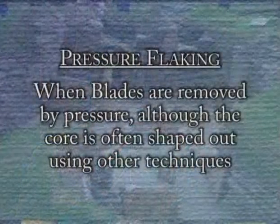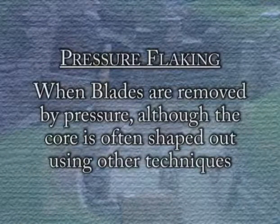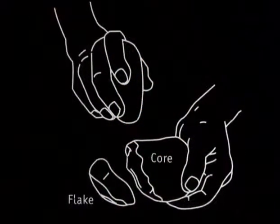In pressure flaking, blades are removed by pressure, although the core is often shaped out using other techniques. Small platforms were made along the edge of the core, and in some cases the core was further prepared by making a ridge on it by alternate flaking. Then pressure is applied — unlike indirect percussion where you tap a punch, in pressure flaking you apply pressure with a chisel or similar tool. The posture of the maker is very important. The pressure-applying point can be made of tusk or antler. This technique requires more equipment and a greater specialization. Signs of heating are also evident in some specimens. It requires very fine-grained raw material and leads to maximum precision.